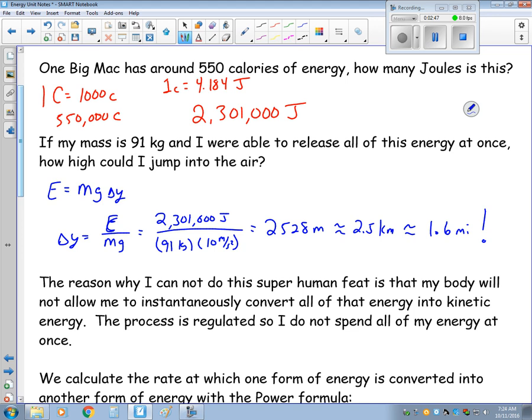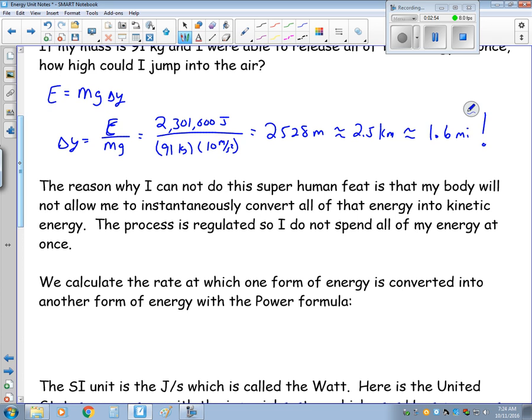Obviously I cannot jump 1.6 miles into the air. The reason why I can't do this is that my body will not allow me to instantaneously convert all of that Big Mac energy into kinetic energy. The whole process is regulated. And that's a really good thing because if you were to suddenly dump all of your energy into something at once, you would die because you wouldn't have any energy for any other function in your body. So it has to be regulated.